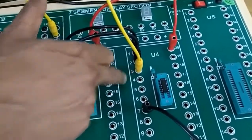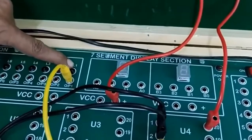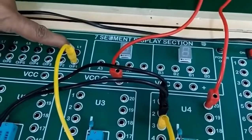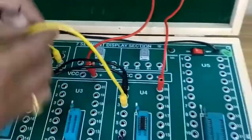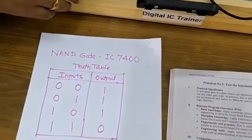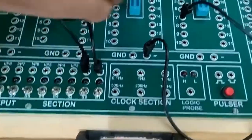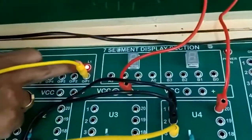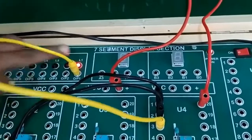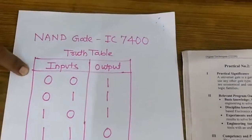Output is obtained at pin number 3 of the IC, which is connected to the output LED. If the LED is off, output is 0; if LED is on, output is 1. For the first demonstration, both inputs are in 0 condition — the input LEDs are off. Looking at the output LED, it is in on condition, meaning output is 1. So when both inputs are 0, output is 1 — the first condition is verified.